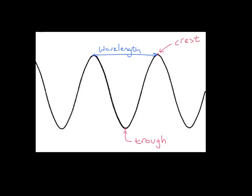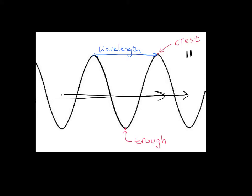If you take a string and you wheel it up and down, you're going to produce a wave that looks a lot like this. Each of these crests are going to be moving in a particular direction. If we were to mark a spot up there, and count the number of times that a crest moves through that spot every second, that would be referred to as the frequency of the wave.